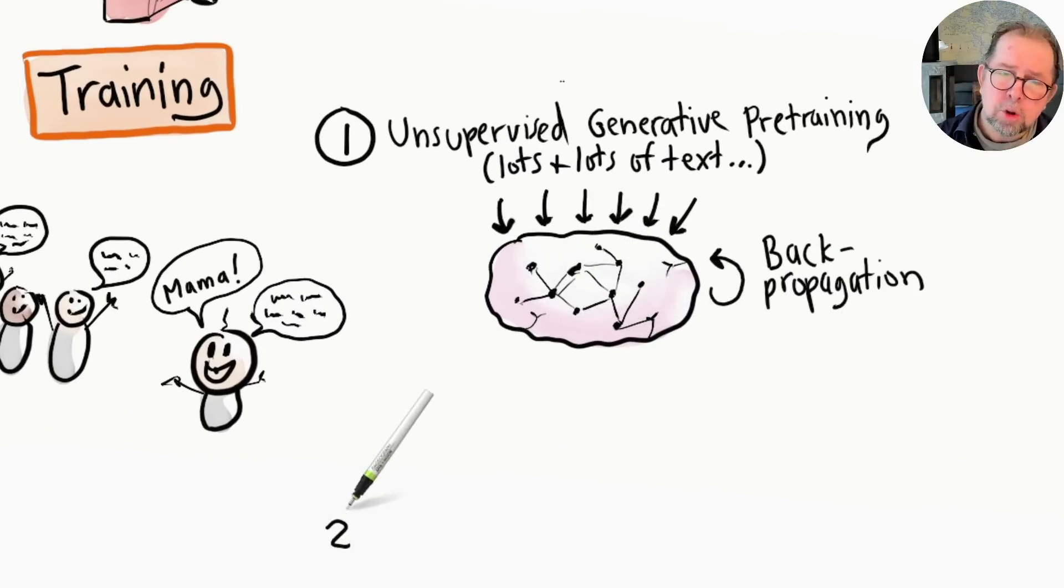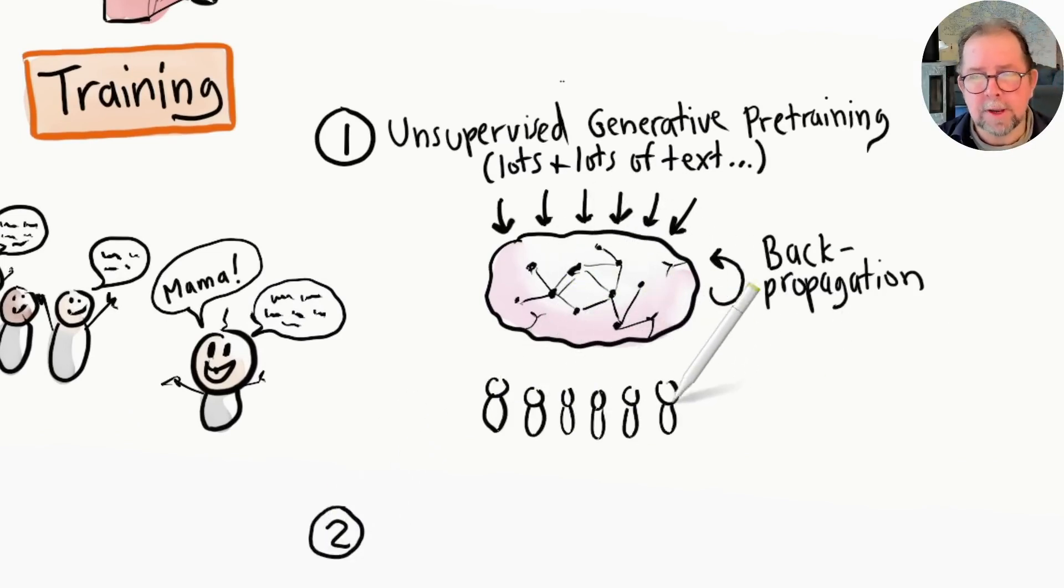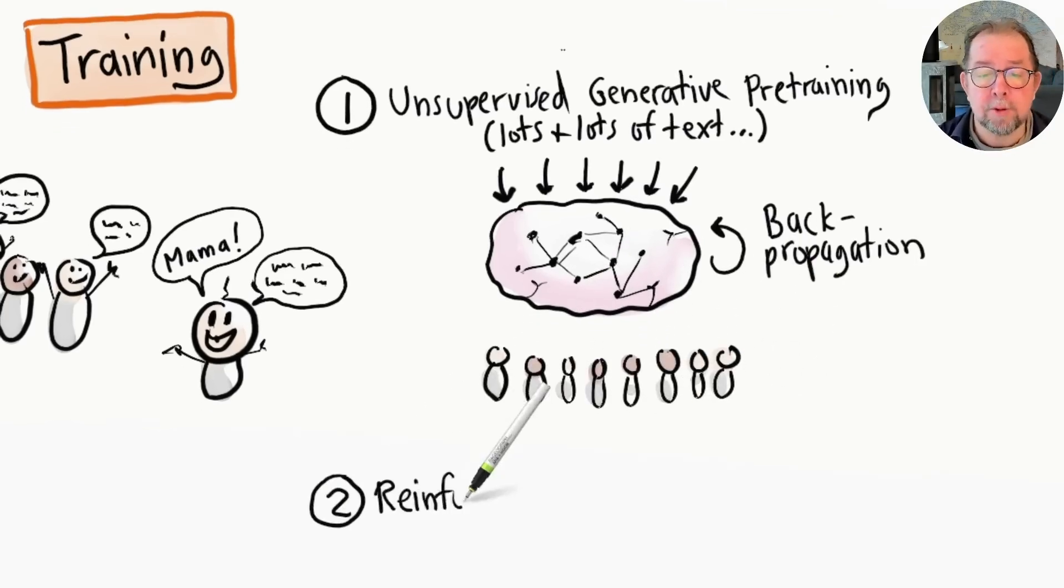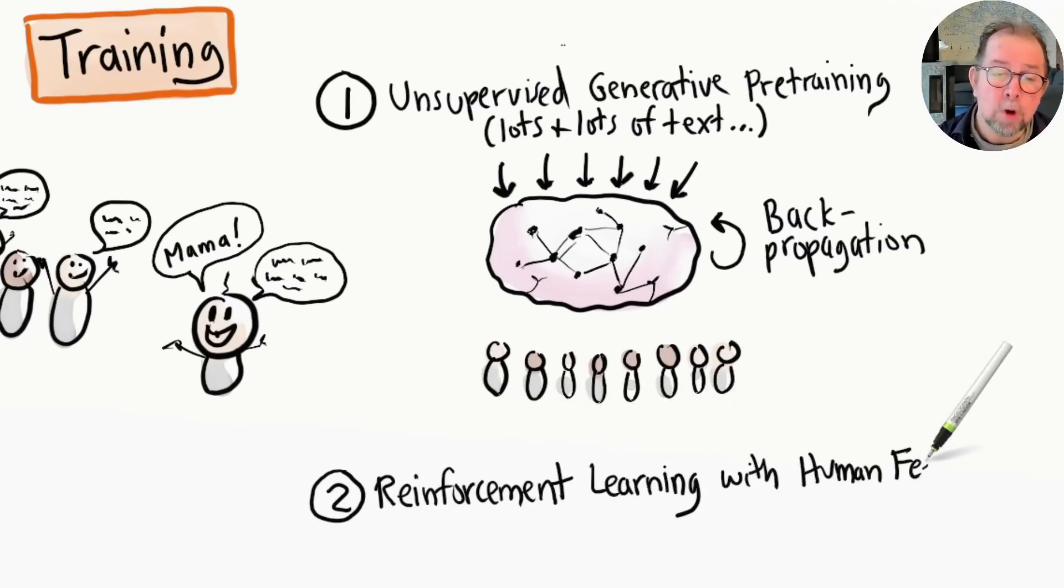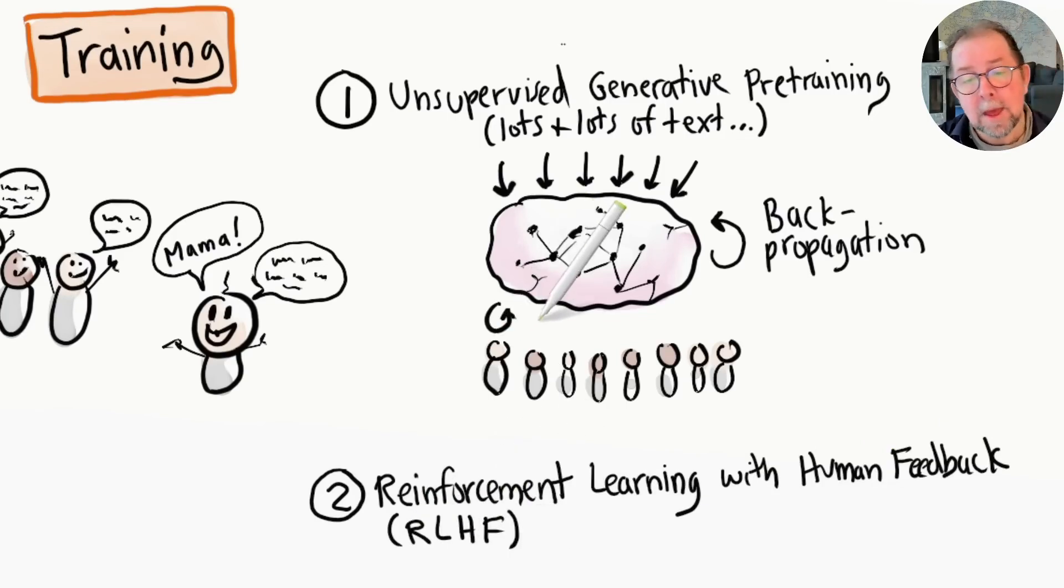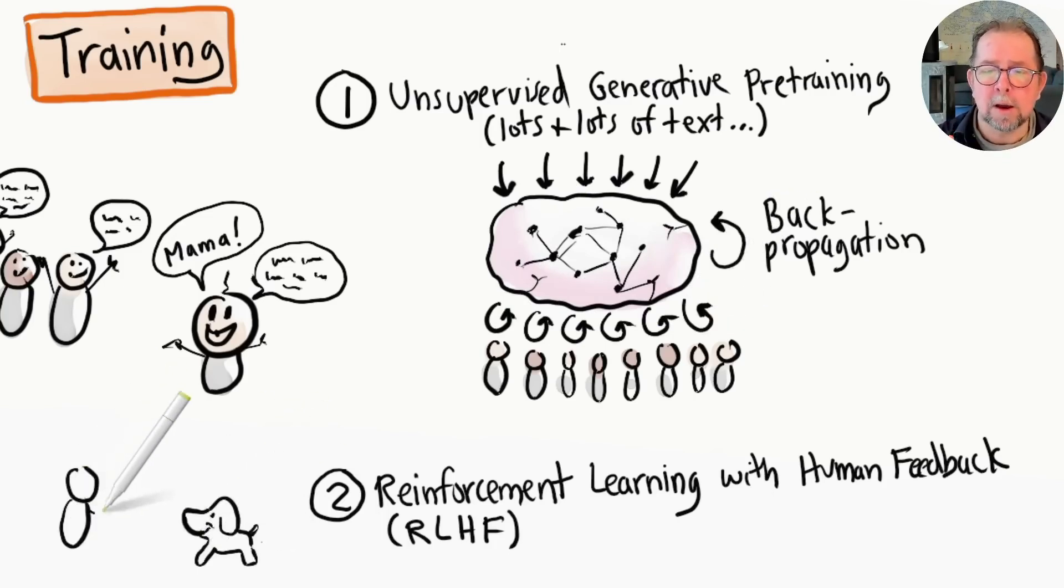However, to become truly useful, a model also needs to undergo human training. This is called reinforcement learning with human feedback, and it involves thousands of hours of humans painstakingly testing and evaluating output from the model and giving feedback, kind of like training a dog with a clicker to reinforce good behavior.